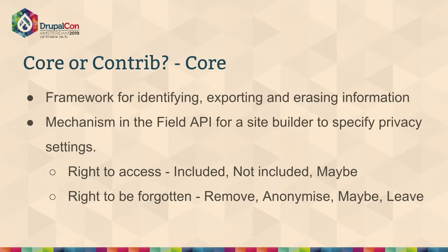The things we had to do required building on top of the field API a lot. The core functionality we think needs to be in core is this concept of a framework for identifying, exporting, and erasing information. If you've used the GDPR module, you'll see that it improves on the field list in core — you see a list of all the fields linked to the user and can change settings on those fields. If that was in core, we could start getting modules to provide sensible defaults, because there's a lot of data in Drupal.